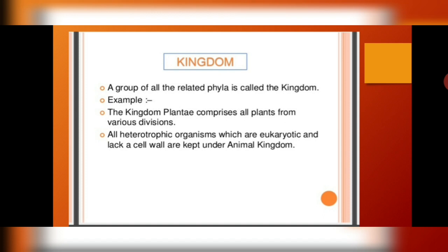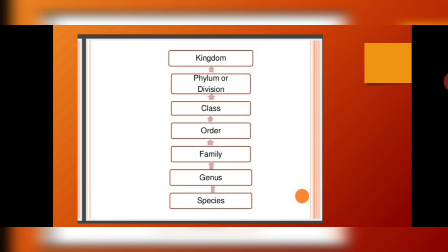Last is kingdom. All similar phyla combine to form a kingdom. We know there are five kingdoms according to the five-kingdom system: Monera, Protista, Fungi, Plantae, and Animalia. The kingdom Plantae comprises all plants and the kingdom Animalia has all animals. The hierarchy goes: kingdom, phylum, class, order, family, genus, species. The mnemonic to remember this is: Keep Pots Clean Or Family Gets Sick.